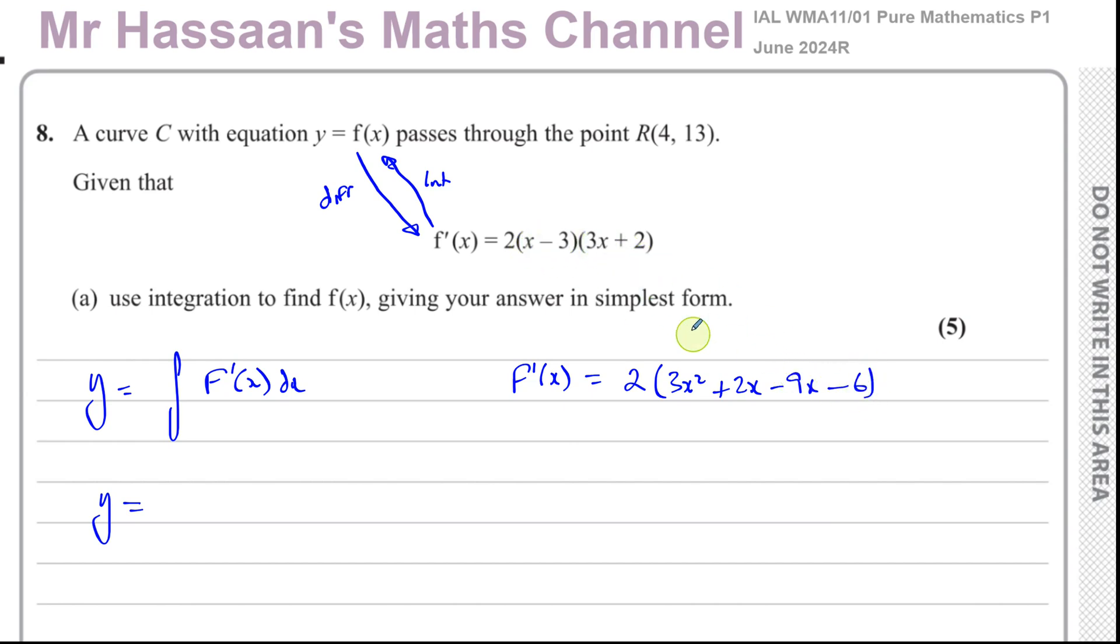You have plus 2x minus 9x, and then you're going to have minus 6. x times 3x is 3x², x times 2 is 2x, minus 3 times 3x is minus 9x, and minus 3 times 2 is minus 6. All of that is multiplied by 2. So you get 6x² plus, and that's 2x minus 9x which is minus 7x times 2 which is minus 14x, and minus 12.